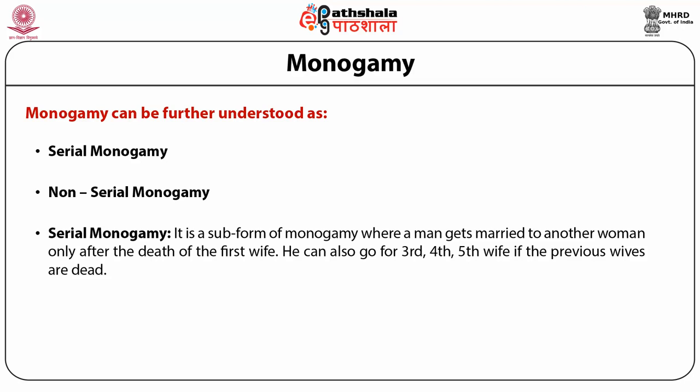Monogamy can be further divided into serial monogamy and non-serial monogamy. Serial monogamy is a sub-form of monogamy where a man gets married to another woman only after the death of the first wife — he can also go for a third, fourth, or fifth wife if each previous wife had died.